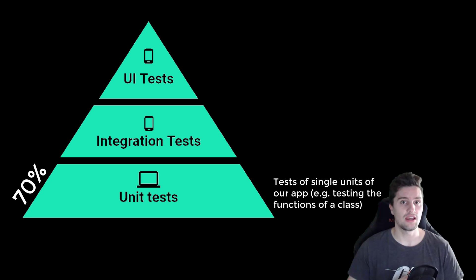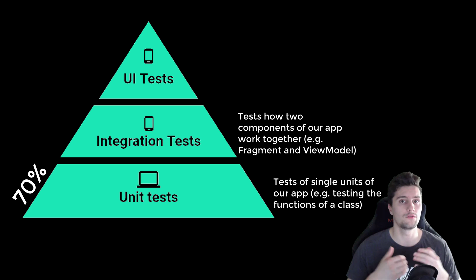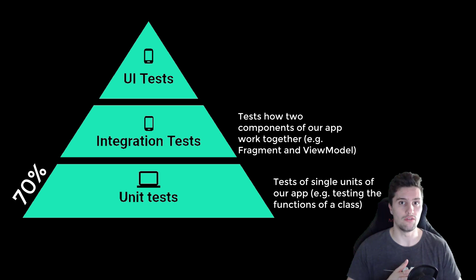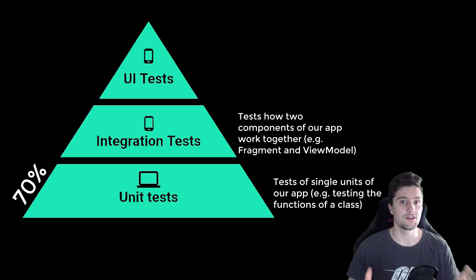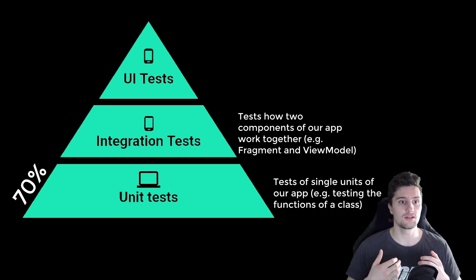Next we have integration tests, which test how different components of our app work together — for example, how a fragment interacts with a view model. It's very important not to confuse integration tests with integrated tests, because that is a big difference. Integration tests test the interaction between different components, whereas integrated tests are tests that rely on Android components and therefore must run on the emulator.